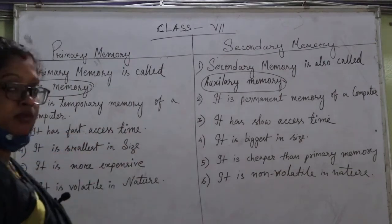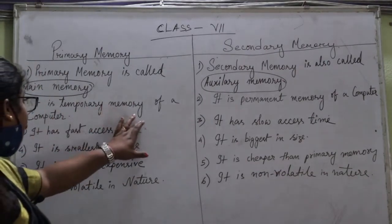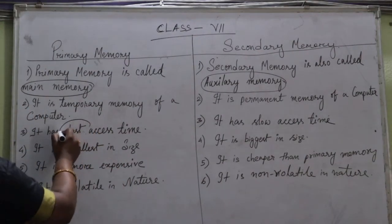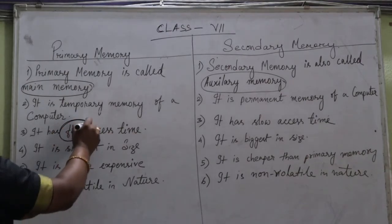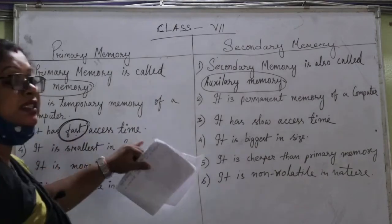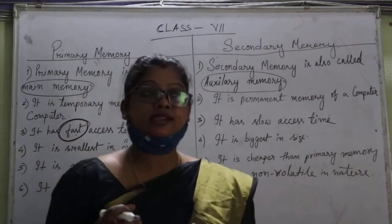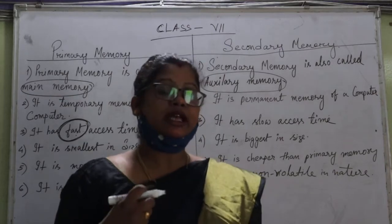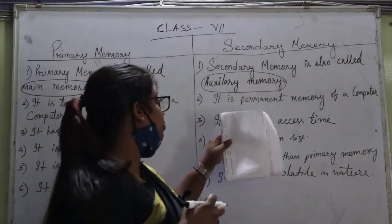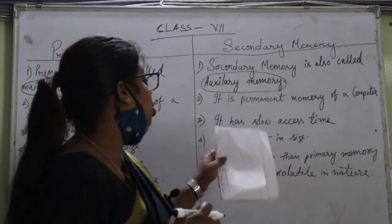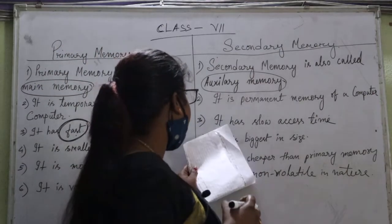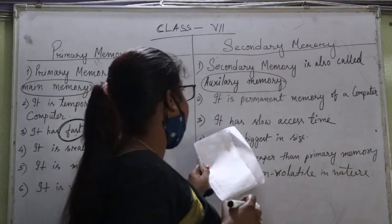Number three point: primary memory has fast access time. The primary memory is fast in accessing data.